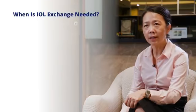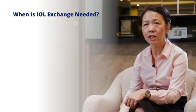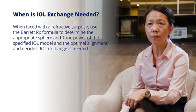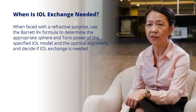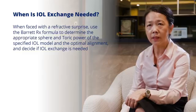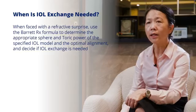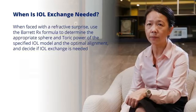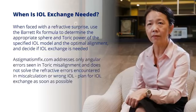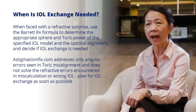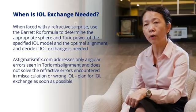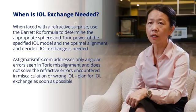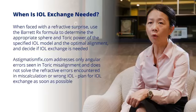So when is an intraocular lens exchange needed? When faced with a refractive surprise, use the Barrett treatment formula to determine the appropriate sphere and toric power of the specified IOL model and the optimal alignment, and decide if IOL exchange is needed. Do note that online toric calculators address only angular errors seen in toric misalignment and do not solve refractive errors encountered in miscalculation or wrong IOL.